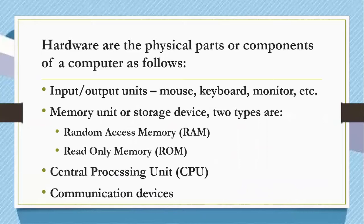Hardware are the physical parts or components of a computer. Input or output units include mouse, keyboard, monitor, and so on. The memory unit or storage device has two types: random access memory or RAM, and read-only memory or ROM. Also included are the central processing unit or CPU, and the communication devices.